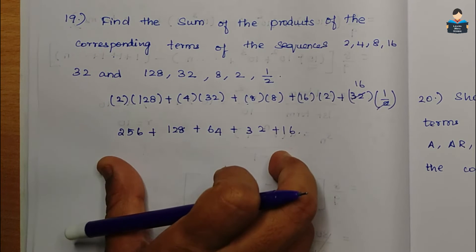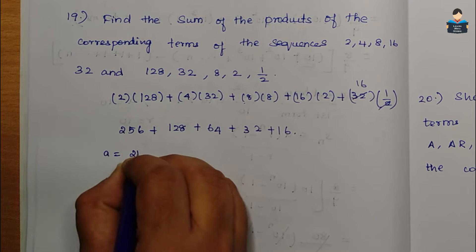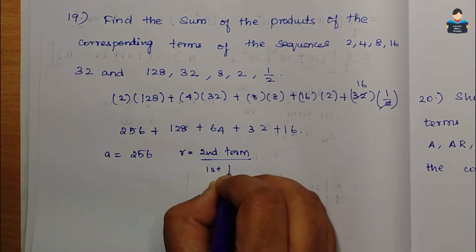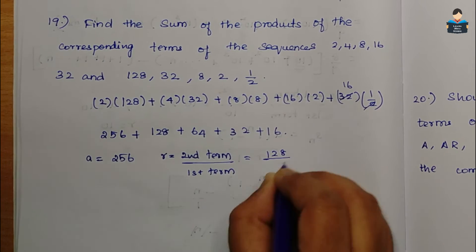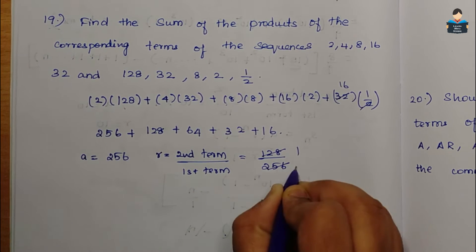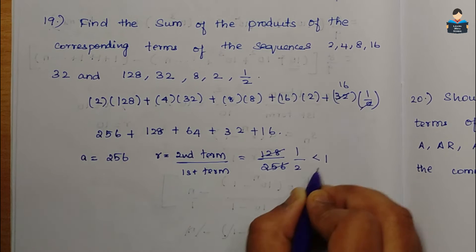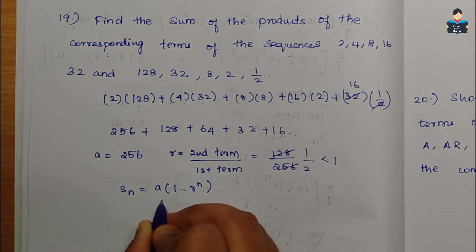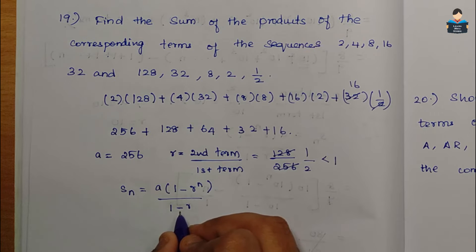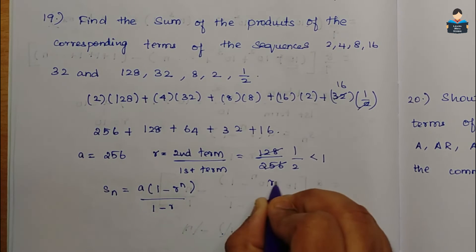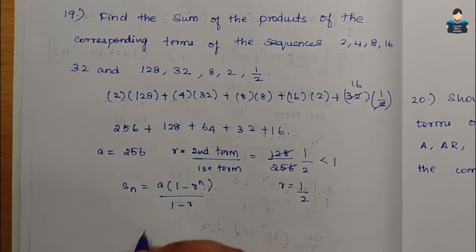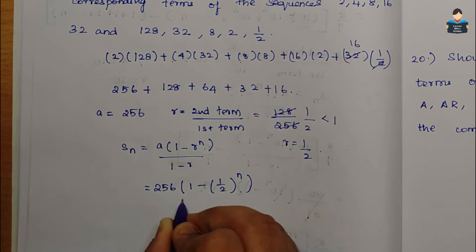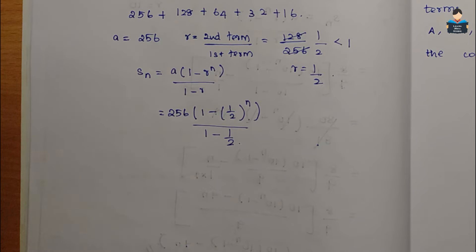The required sum is formed by these products. We observe this is a GP with first term a = 256 and common ratio r = second term / first term = 128/256 = 1/2. Since r = 1/2 < 1, we use the Sn formula: Sn = a(1 - rⁿ) / (1 - r).